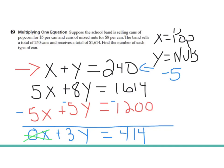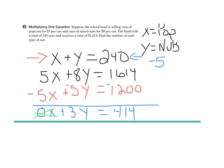That 0x is eliminated, and I have one variable. So now I can divide both sides by 3, and I get y equals 138.